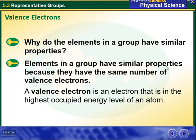Hello my dear students and welcome to week 7 overview. During this week we are going to talk about the representative groups. We will start by defining the valence electrons. A valence electron is an electron that is in the highest occupied energy level of an atom.